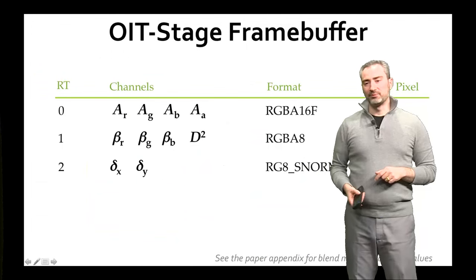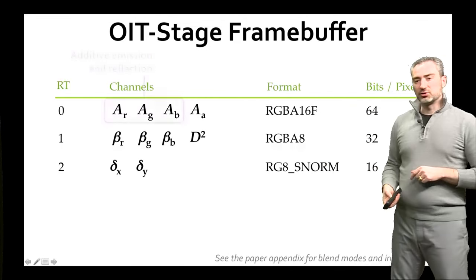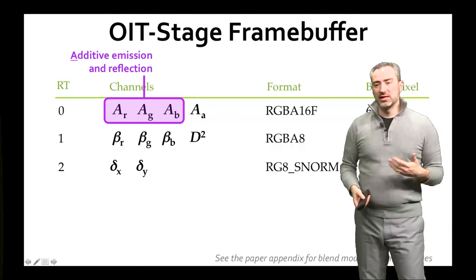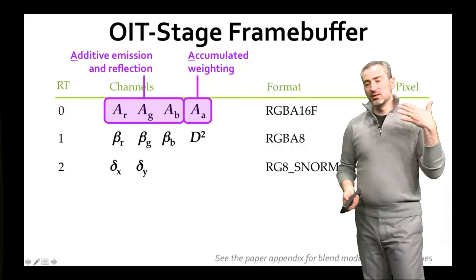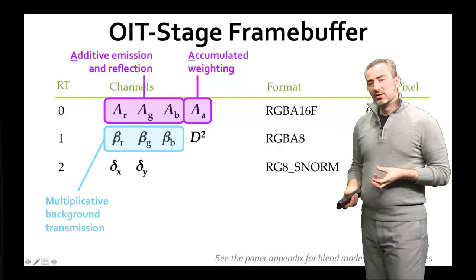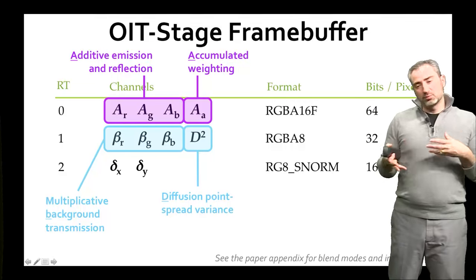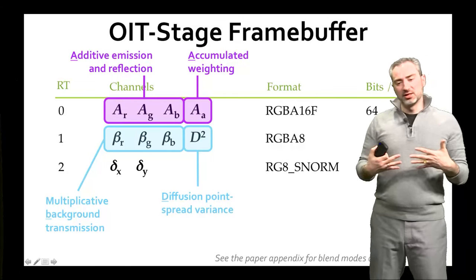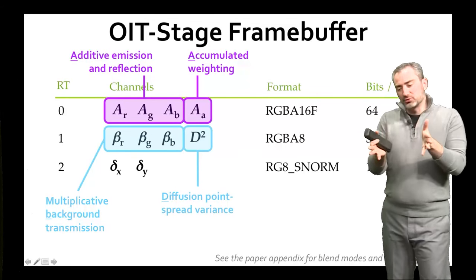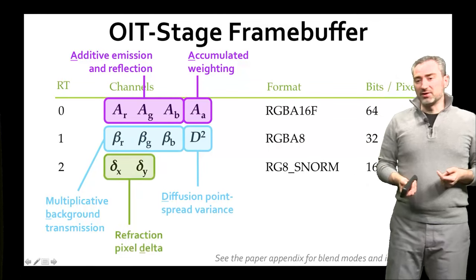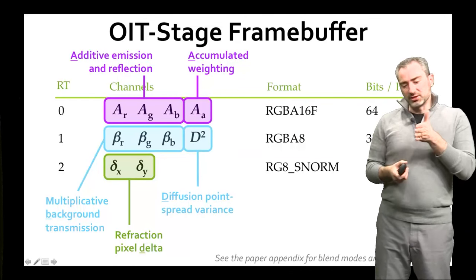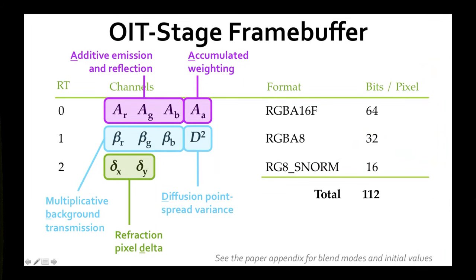The order-independent frame buffer has three render targets. The first stores additive terms — emission and reflection — as well as a normalizing constant of the accumulated weighting. The second buffer stores an alpha channel for the background: the multiplicative value indicating how much background light gets transmitted. We also store the variance of the diffusion point spread function — for frosted glass there's a naturally occurring Gaussian spread, and we store variance because it combines linearly. For refraction, we store the pixel delta that each surface offsets values by. These can be compressed into 112 bits total; if only alpha is needed like previous order-independent transparency methods, it can be reduced to 88 bits per pixel.